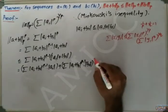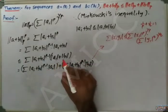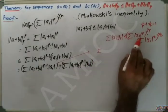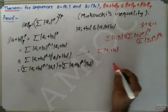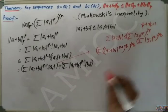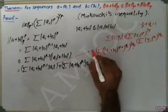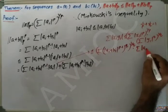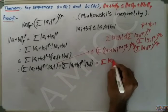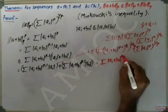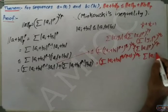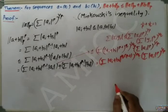Applying Hölder's inequality to the first summation, it is less than or equal to (Σ|a_i + b_i|^((p-1)q))^(1/q) · (Σ|a_i|^p)^(1/p). This equals (Σ|a_i + b_i|^(q(p-1)))^(1/q) · (Σ|a_i|^p)^(1/p).